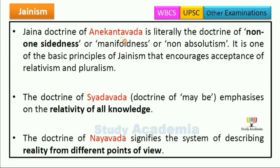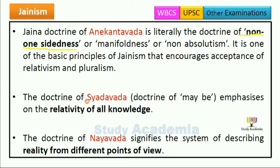The Jaina Doctrine of Anikantavada is literally the doctrine of Non-One-Sidedness or Manifoldness and Non-Absolutism. It is one of the basic principles of Jainism that encourages acceptance of Relativism and Pluralism — yeh bahulbad aur Pluralism ki sweekriti ko encourage karta hai. The doctrine of Syaadwad, which means doctrine of maybe, emphasizes on the relativity of all knowledge — sabhi prakar ke gyaan ko emphasize karta hai.